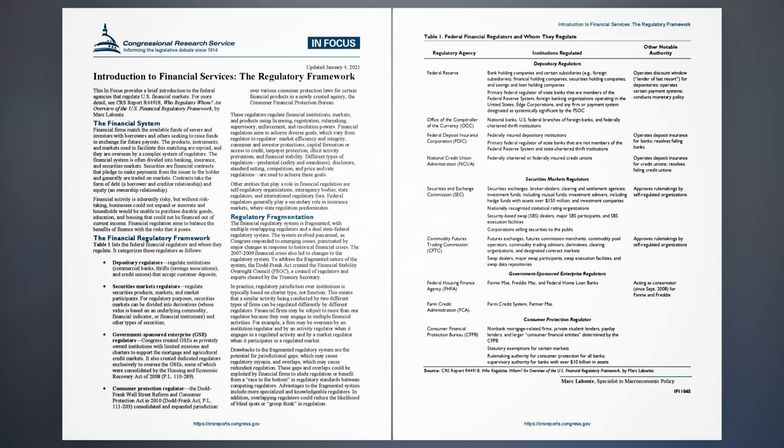Financial regulation aims to achieve diverse goals, which vary from regulator to regulator: market efficiency and integrity, consumer and investor protections, capital formation or access to credit, taxpayer protection, illicit activity prevention, and financial stability. Different types of regulation — prudential, safety and soundness, disclosure, standard setting, competition, and price and rate regulations — are used to achieve these goals. Other entities that play a role in financial regulation are self-regulatory organizations, interagency bodies, state regulators, and international regulatory fora. Federal regulators generally play a secondary role in insurance markets, where state regulation predominates.